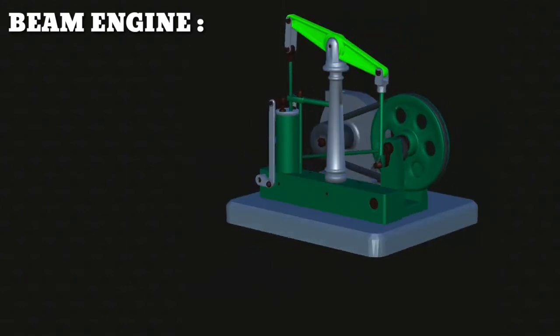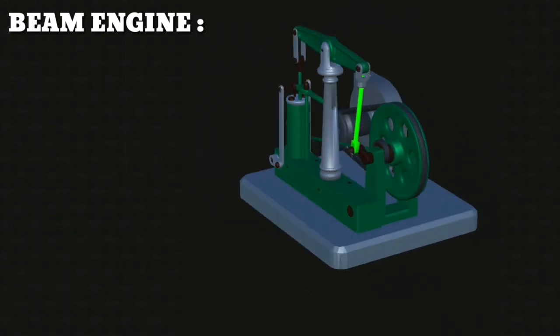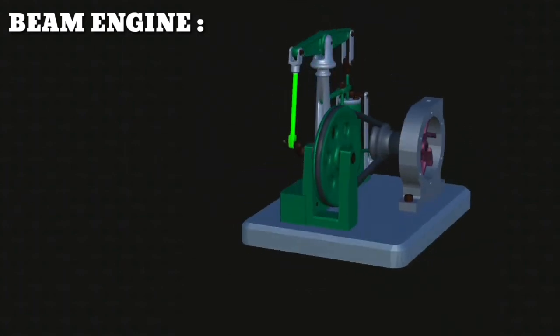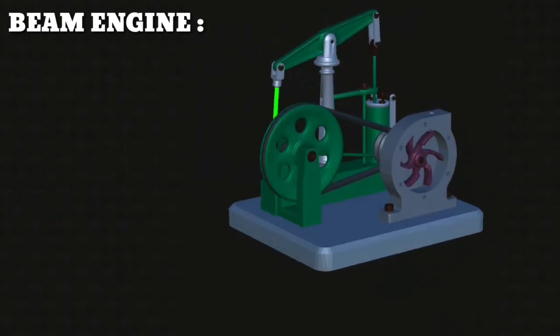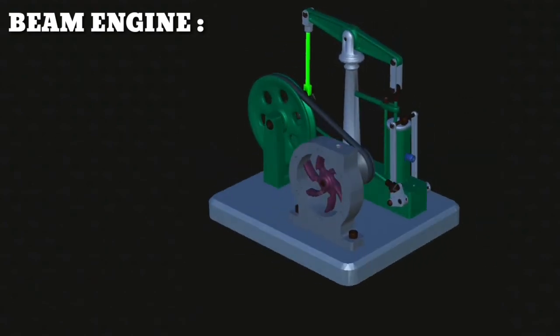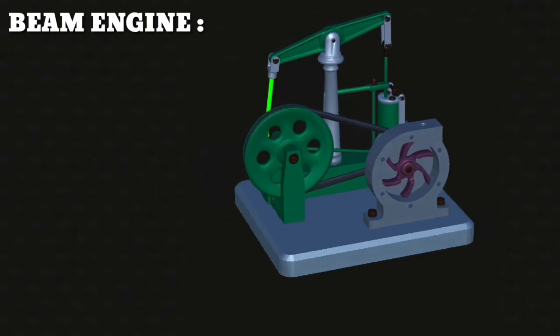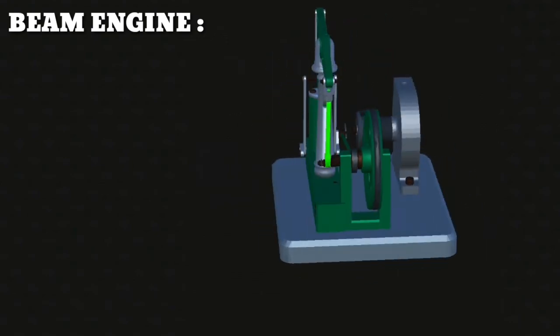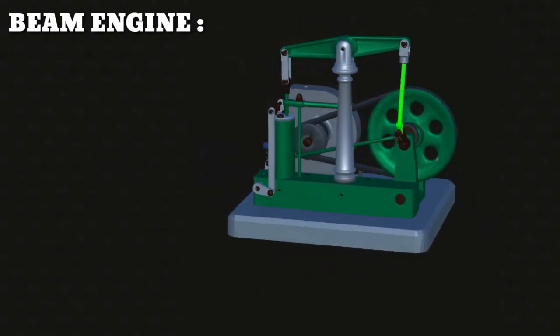Applications of beam engine: The mechanism converts rotary motion to reciprocating motion. This is used in machine tools and pumps. It is used for extracting oil from oil wells. The equipment is called a pump jack.